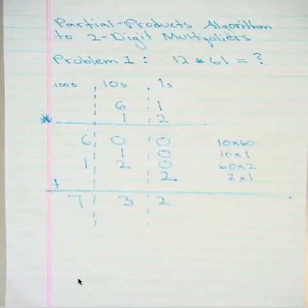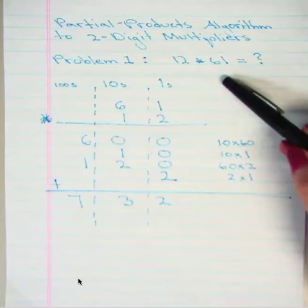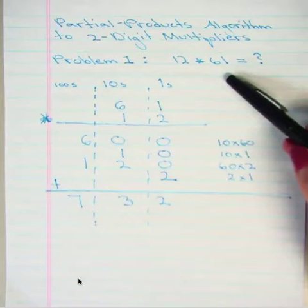Today we are going to demonstrate the partial products algorithm for two-digit multipliers. The problem that you see here is 12 times 61, and we're going to use the partial products method to solve this problem.